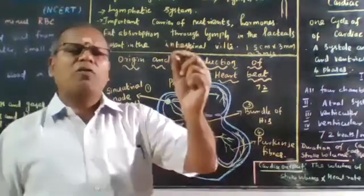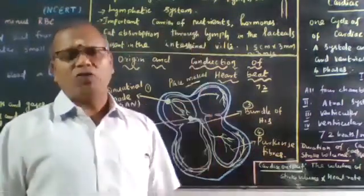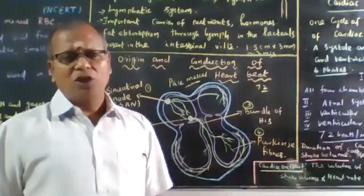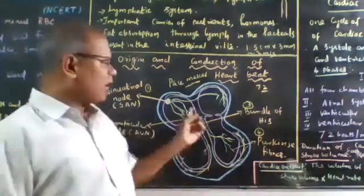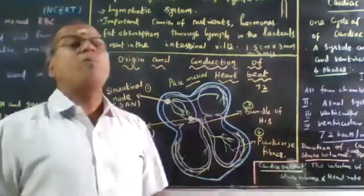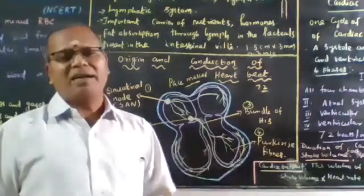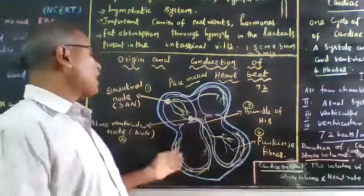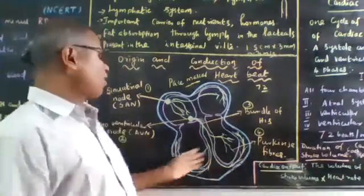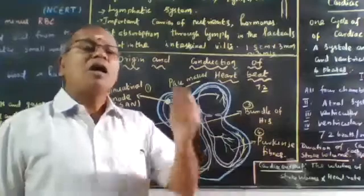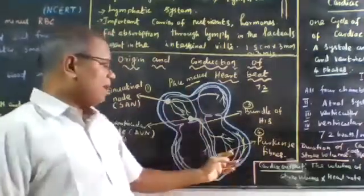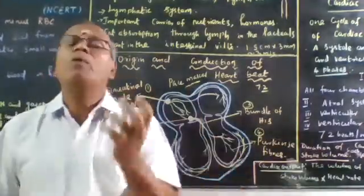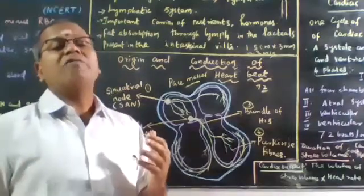So, sino-auricular node pacemaker to atrioventricular node to bundle of Hiss. It branches into two: one to the right ventricle, another to the left ventricle. Both ventricles are provided with fine threads - Purkinje fibers.